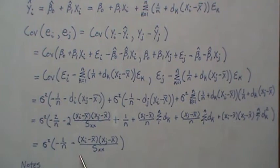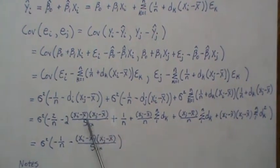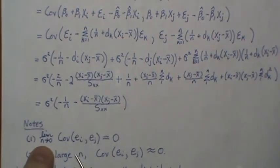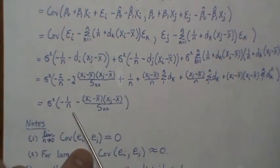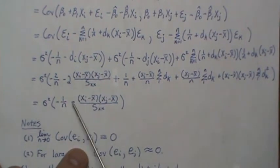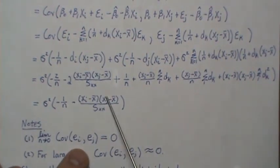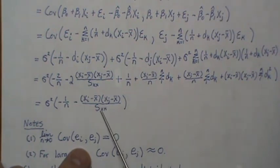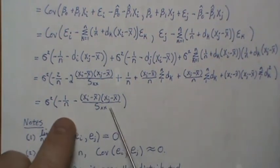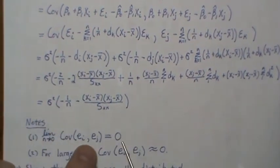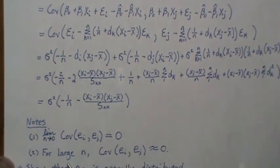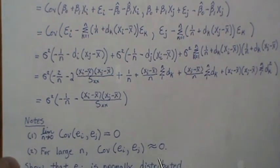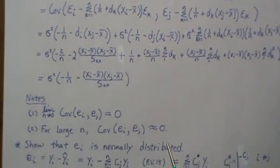We wanted the covariance to be zero, and it's not exactly zero — but as n goes to infinity it goes to zero. As n gets large, Sxx goes to infinity, making the whole expression go to zero. So for large n, the covariance between any two residuals is approximately zero.